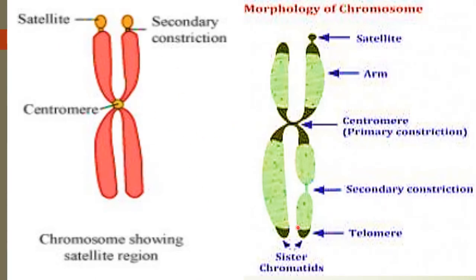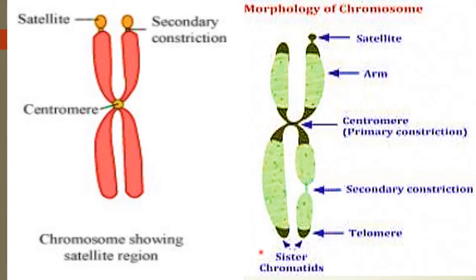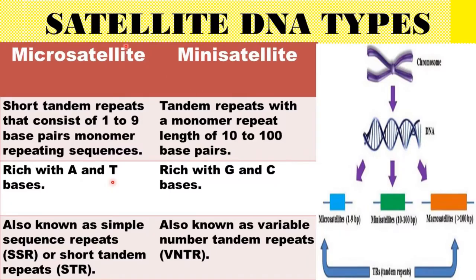In some chromosomes, in addition to the centromere or primary construction, one or more constructions are present and they are termed as secondary construction. The chromosome region between the secondary construction and the nearest telomere is called a satellite, and the chromosome that possesses this region is called a satellite chromosome or SAT chromosome.